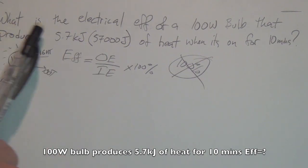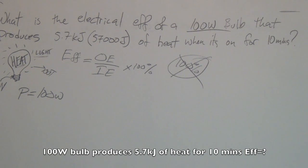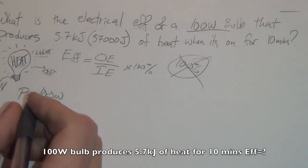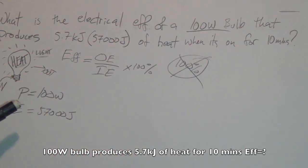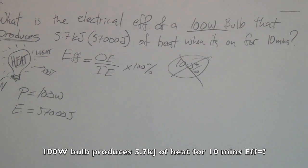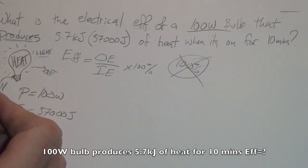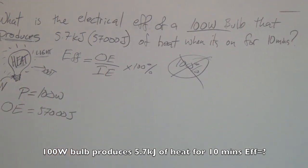We have a 100 watt bulb — that is power equals 100 watts. It produces 57,000 joules of energy. Now, I don't know which one this is — is it output or is it input? Some of you are going "it's input," some "it's output." Well, if you know your questions, "produces" is a key word here. "Produces" means that it is a product — the product of when electricity goes into the light bulb and comes out. So this is actually our output energy.